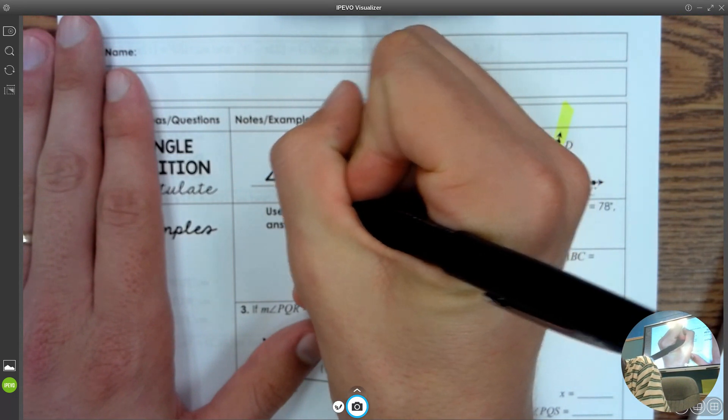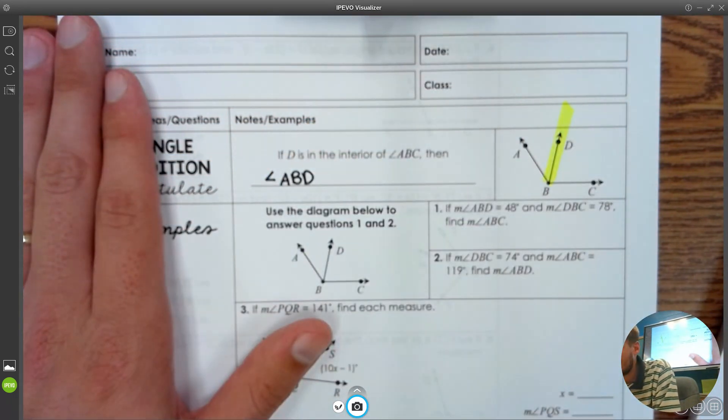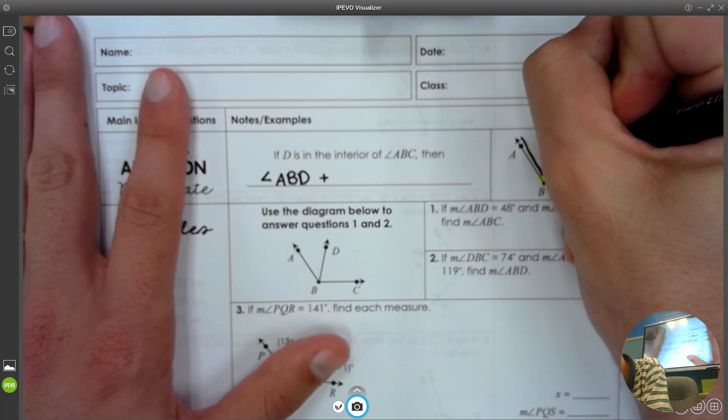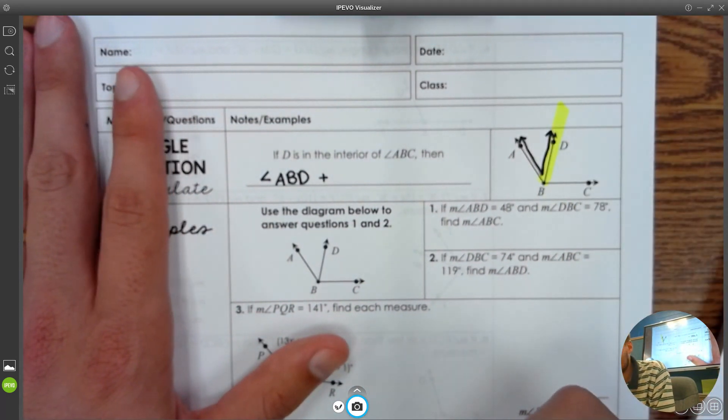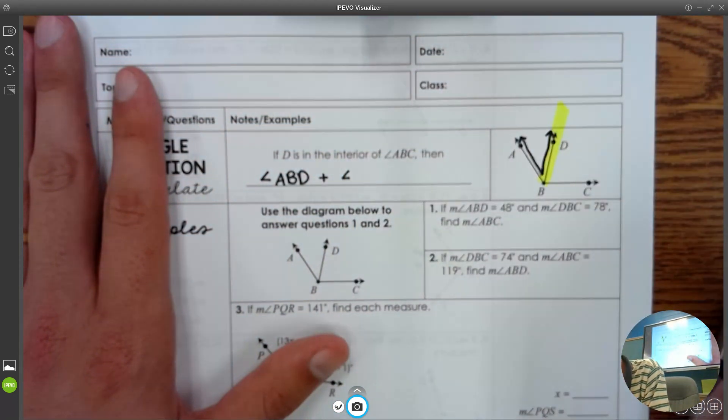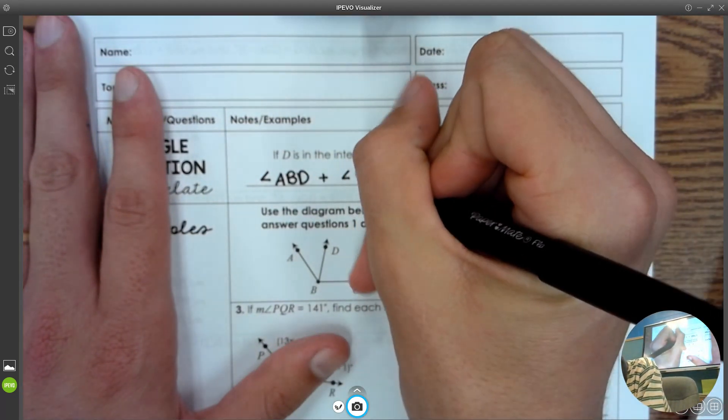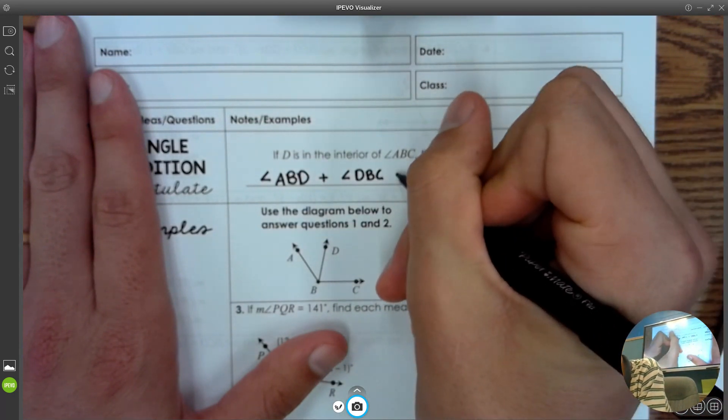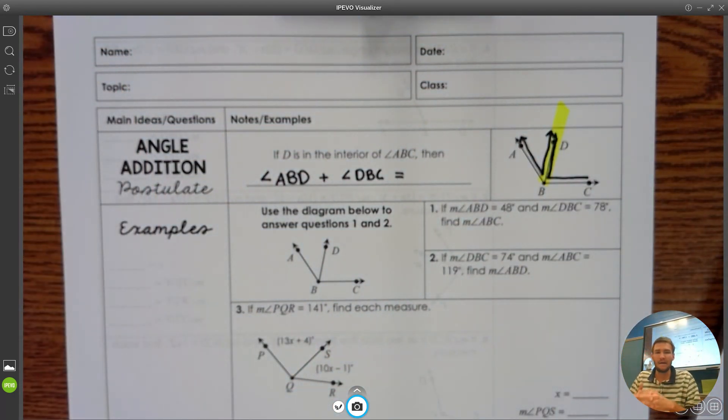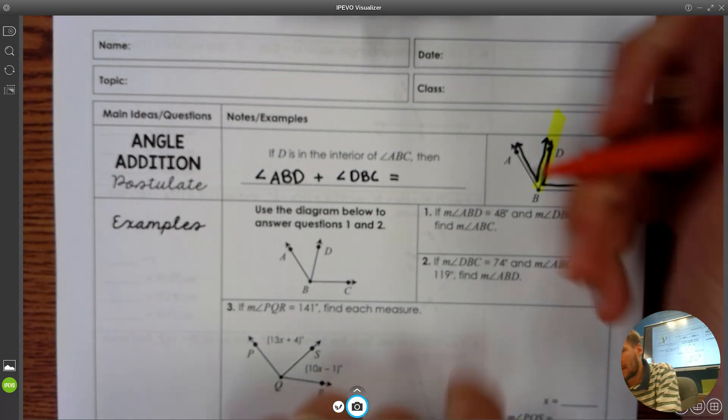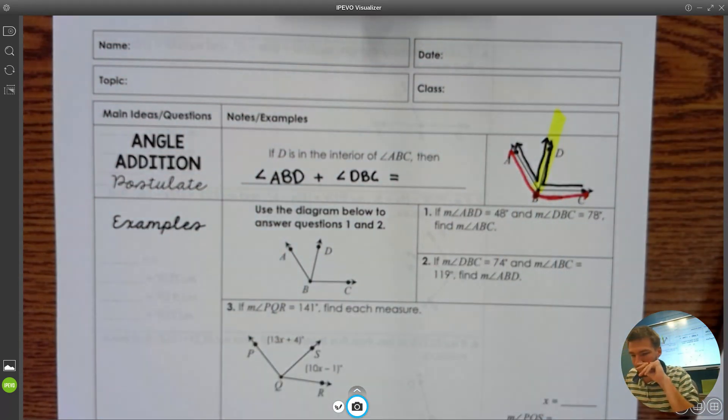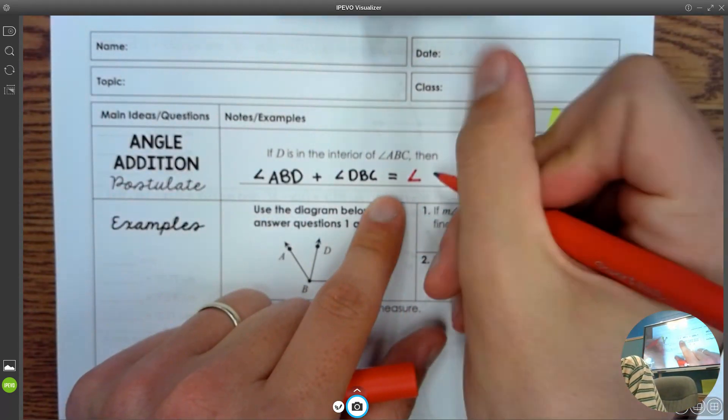But we can trust that angle ABD, that would be this left piece, and if we add that with angle DBC, those two small angles, when you measure them and add them up, it's going to be equal to the whole thing of ABC. That is an angle, angle ABC.